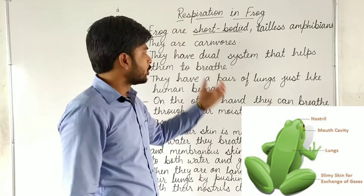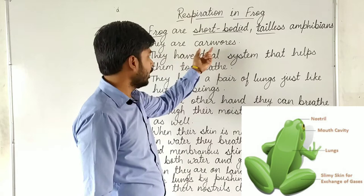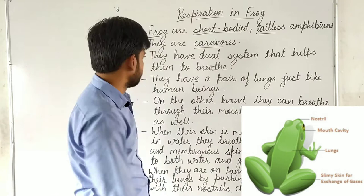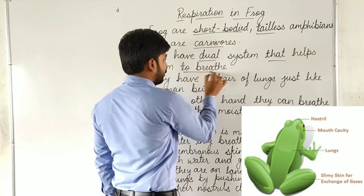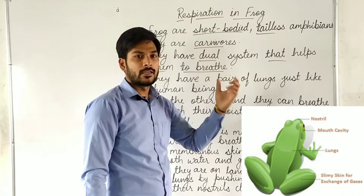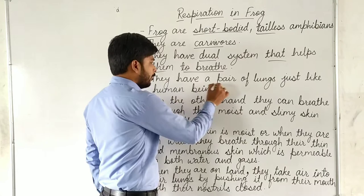Frogs have a short body and no tail. They are carnivores. They have a dual system that helps them to breathe. Ab inका dual system kya hota hai — woh aapko bataata hoon. Inke paas dual system hota hai jis ki wajah se woh apna respiration process complete karte hain.